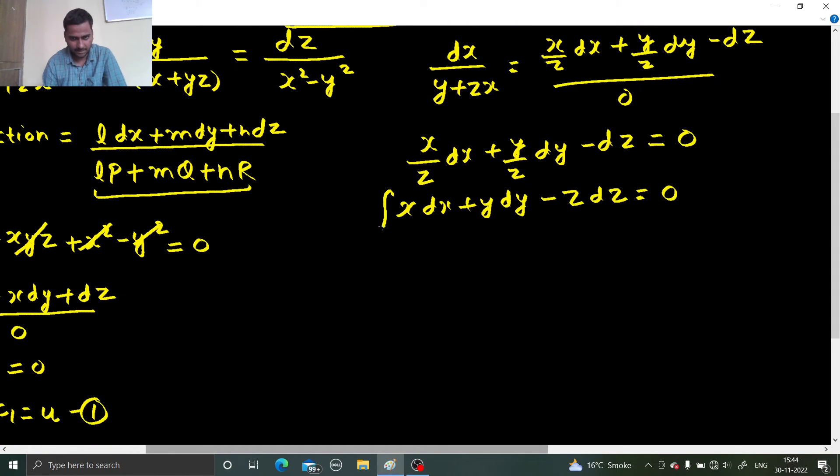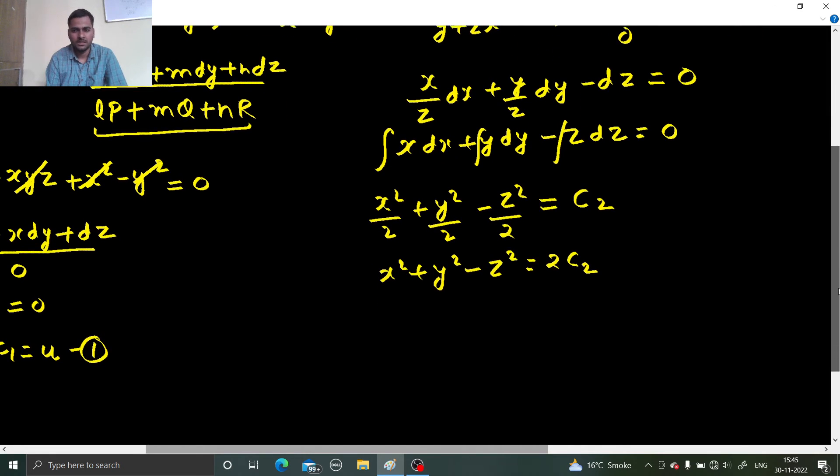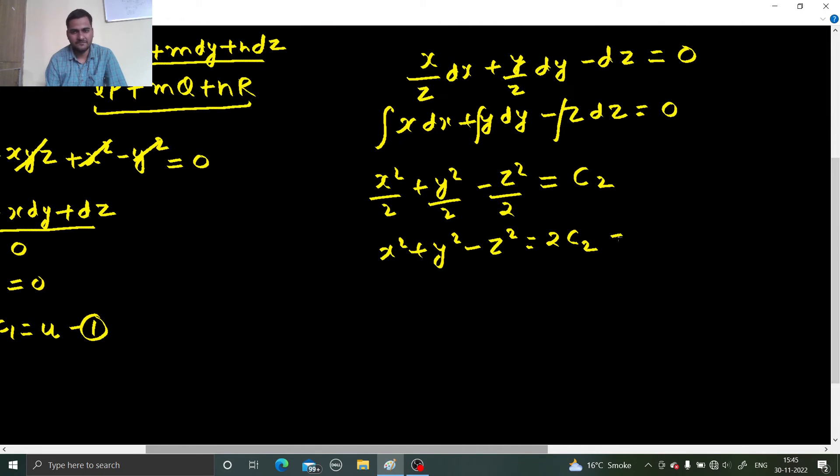Integrate now x square by 2 plus y square by 2 minus z square by 2 equals to c2 or x square plus y square minus z square equals to 2 c2 let's name that as v.